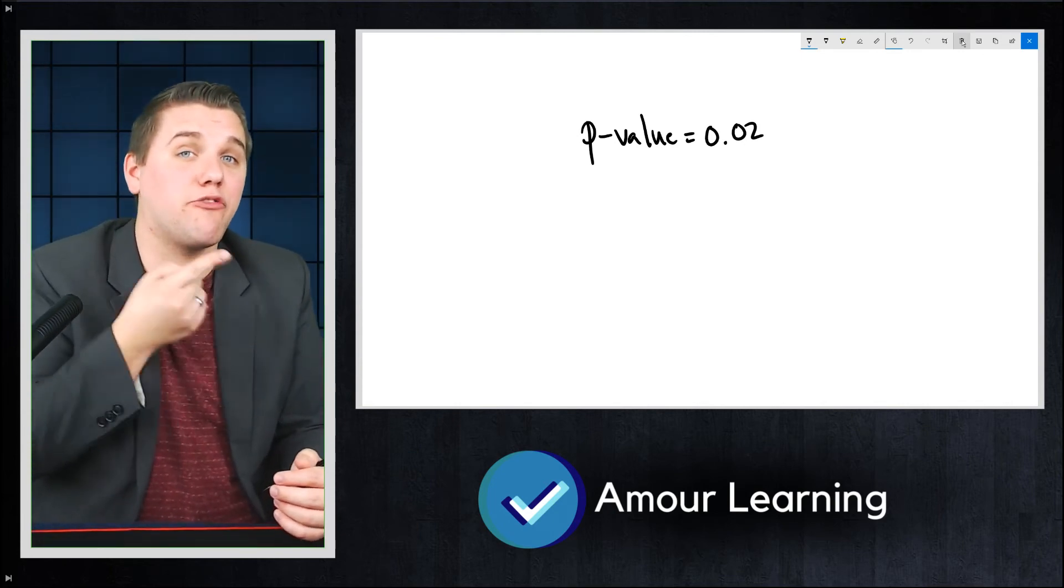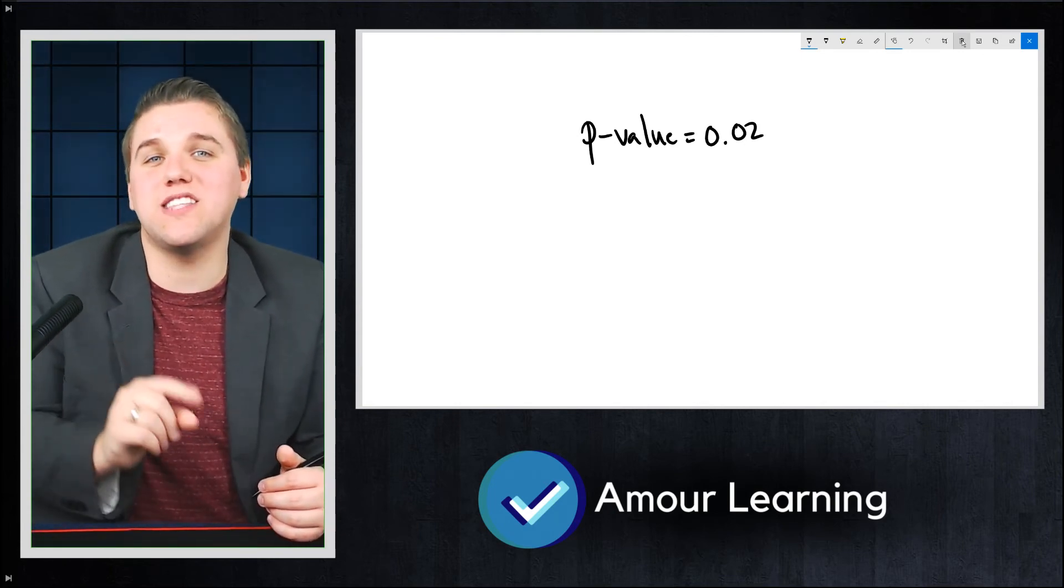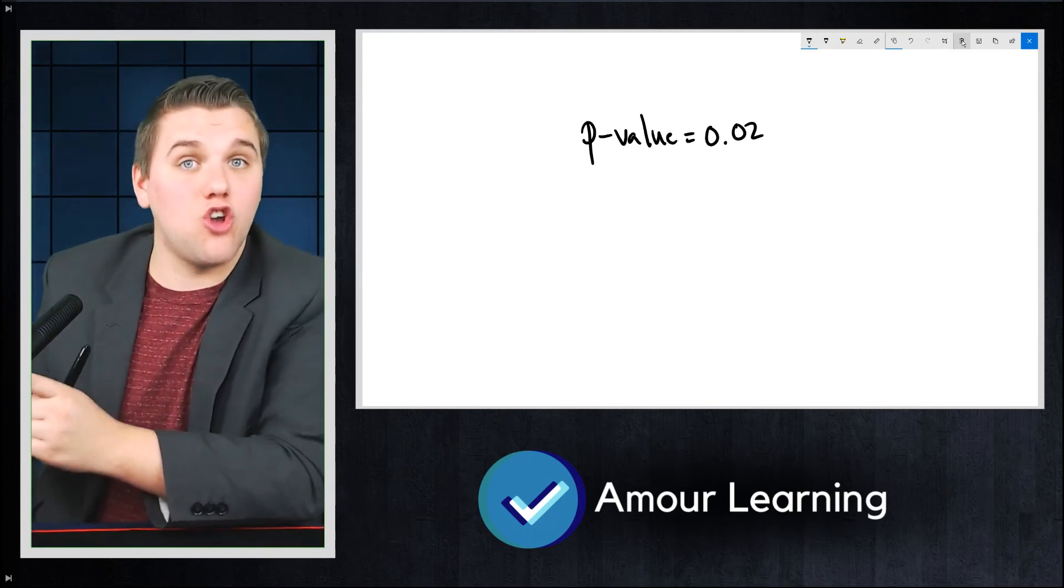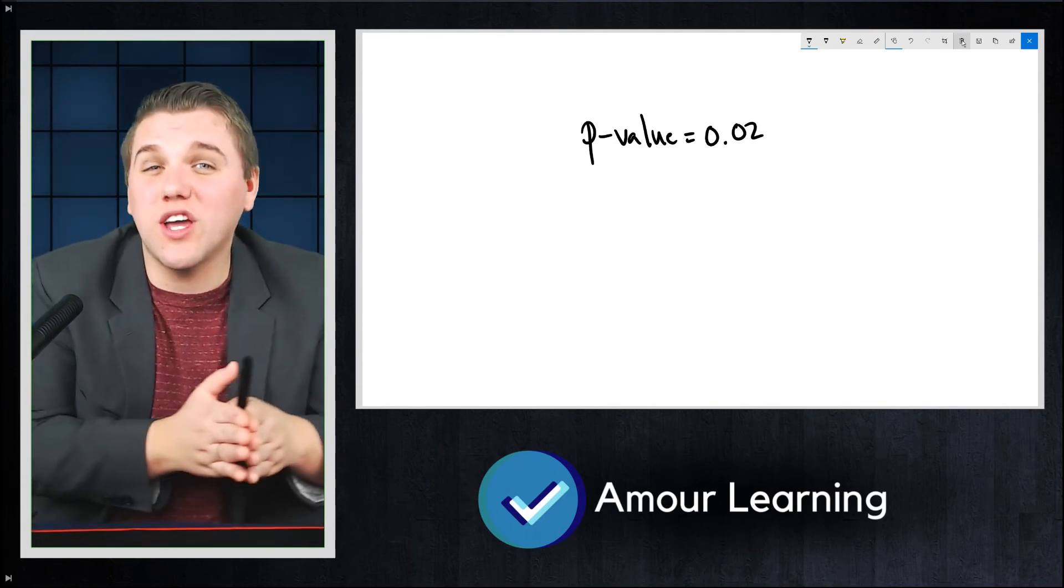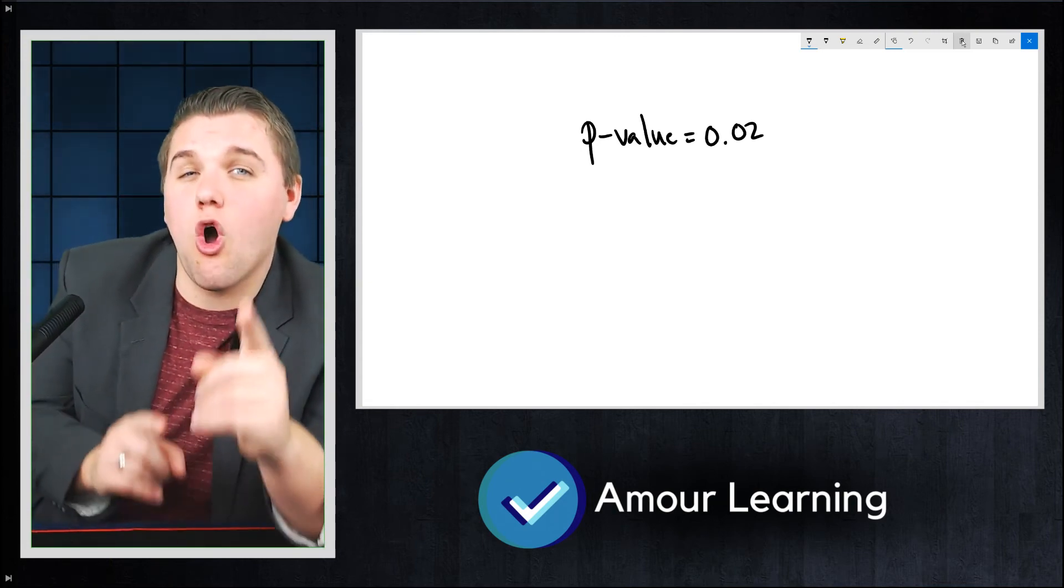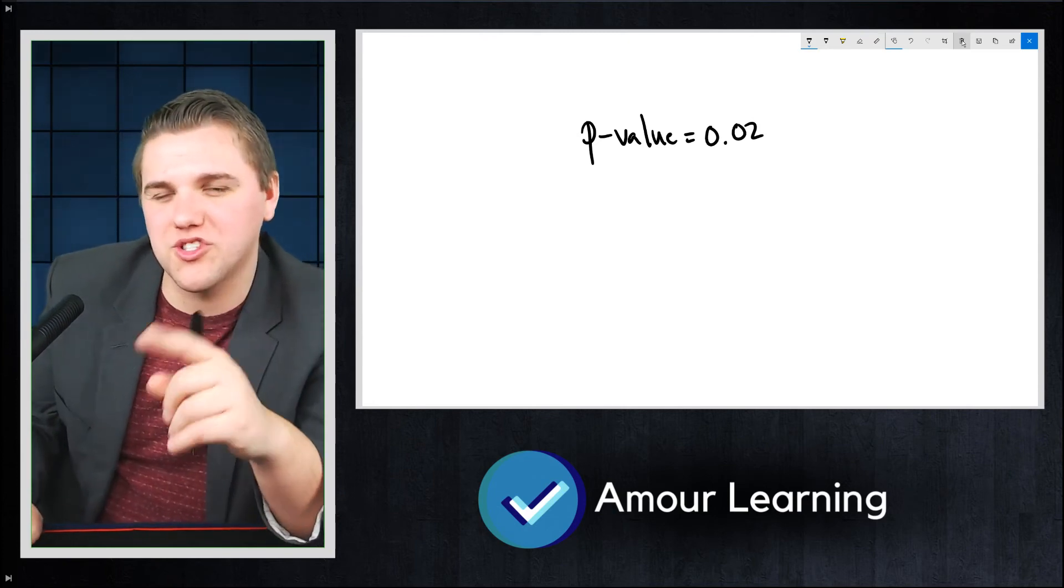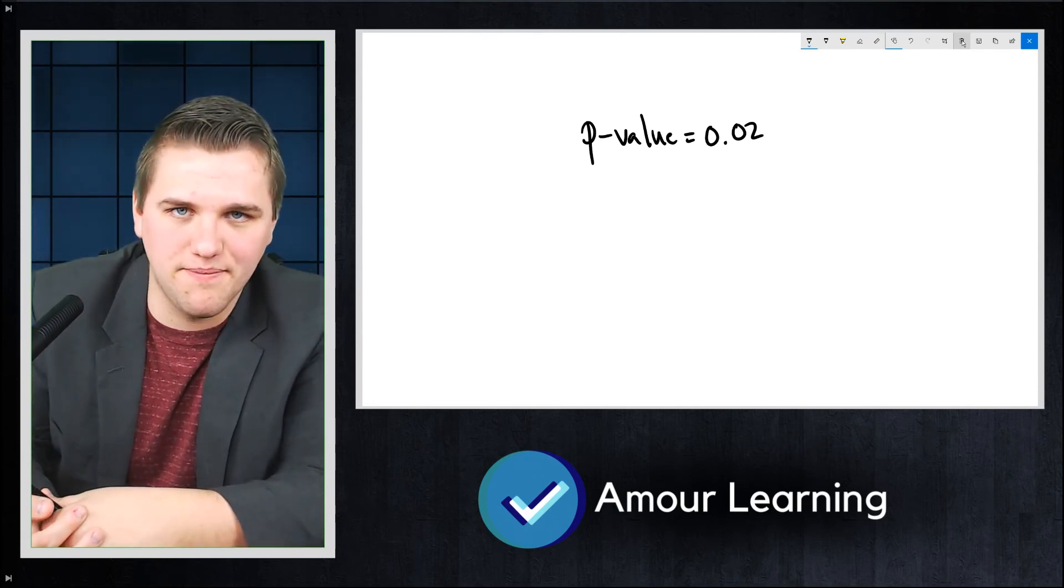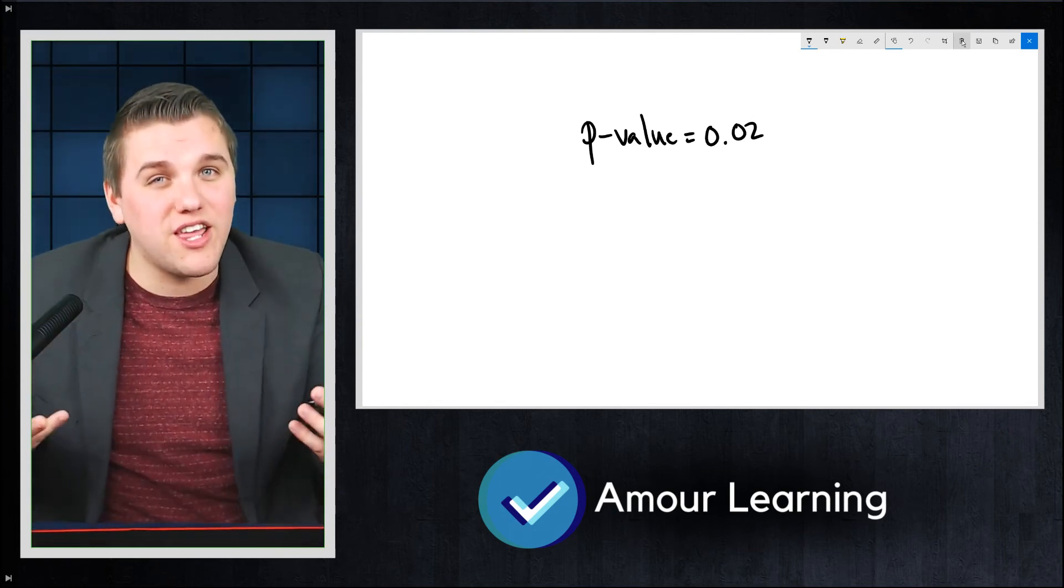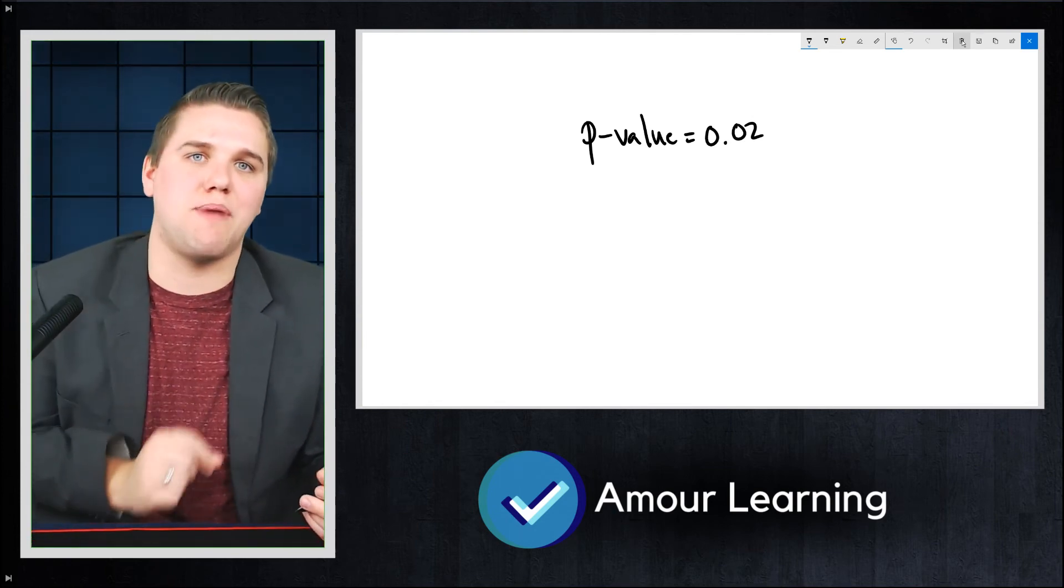So for example, if you get a p-value of 0.02, that just means that the results of your experiment are so rare relative to the null hypothesis that if you conducted 100 experiments that were similar to your experiment, you would only see results as rare as yours 2% of the time. That's pretty uncommon. That means your results are fairly uncommon if the null hypothesis is true.